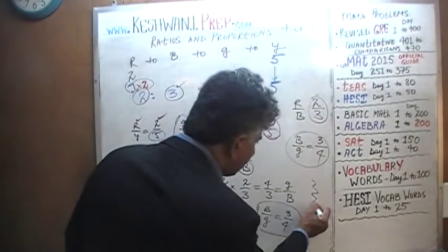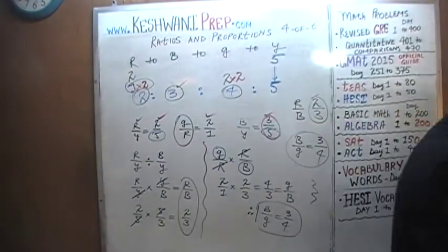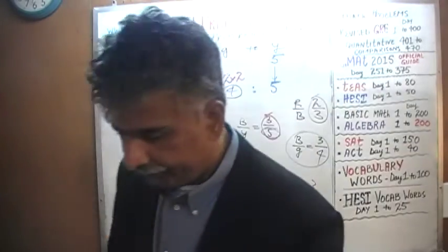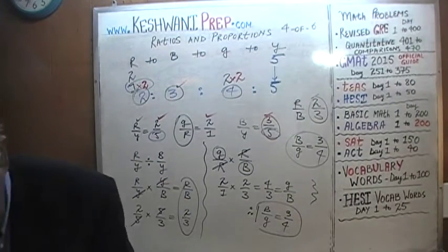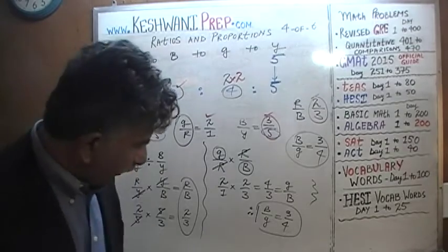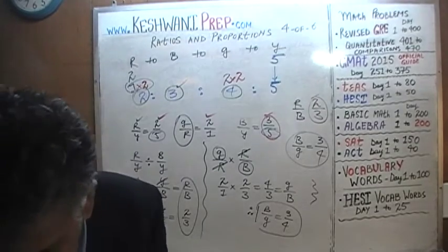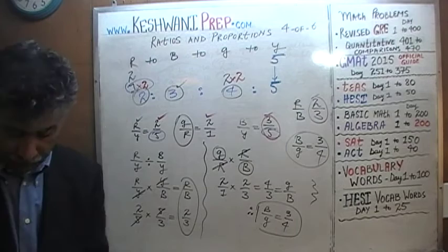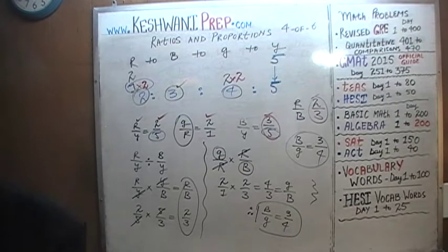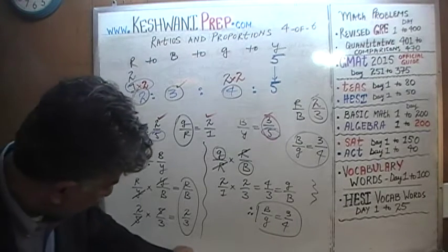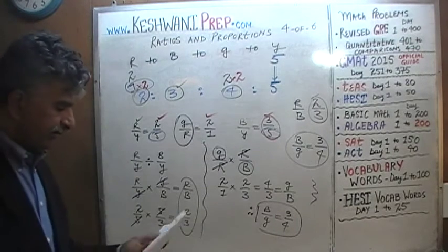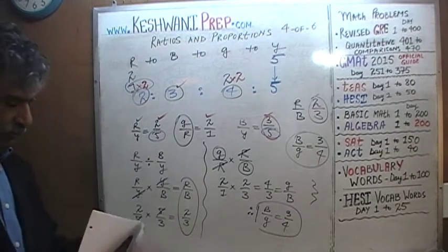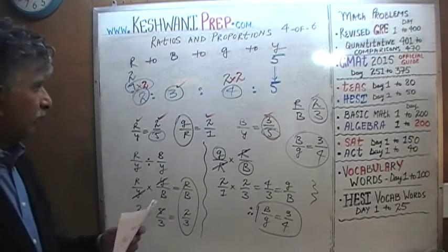Let's move on to the next problem. I need to erase everything before we go to number 27. Number 27 is the same idea — as soon as the question is on the blackboard, I want you to try it yourself.